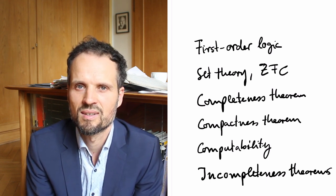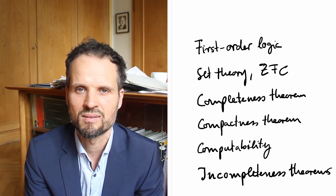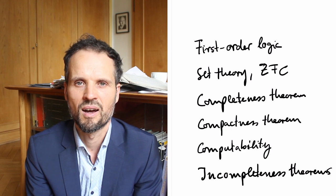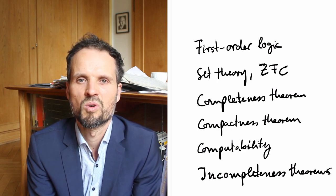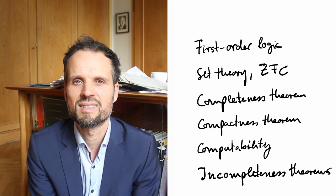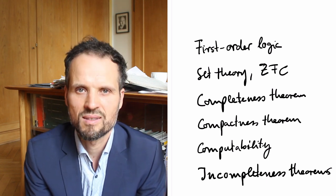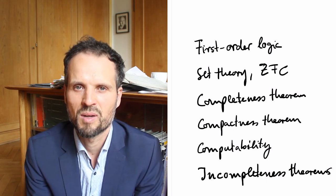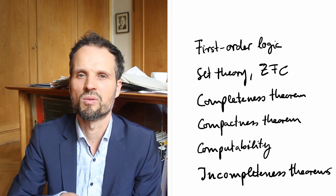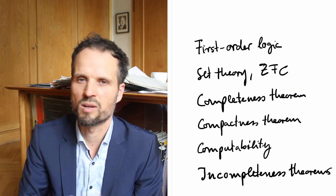We would like to be consistent. If you would be inconsistent, everything would follow from the axiom system, it would be worthless. So of course we want that ZFC is consistent, but we can't prove it in ZFC. And this can be shown. We can show that we can't show.